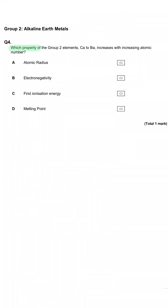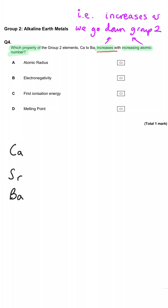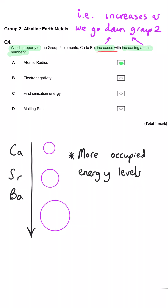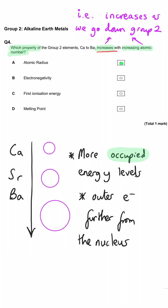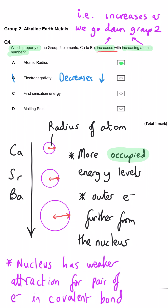Which property of the Group 2 elements, calcium to barium, increases with increasing atomic number? A, atomic radius — this is in fact the correct answer. The atoms have extra energy levels as you work your way down the group, so the radius from the nucleus to the outermost electron increases.